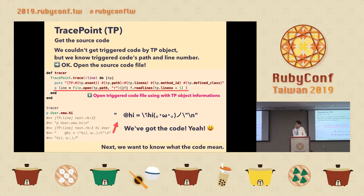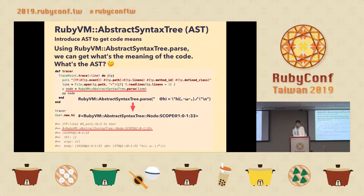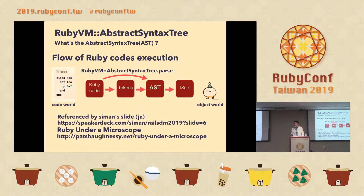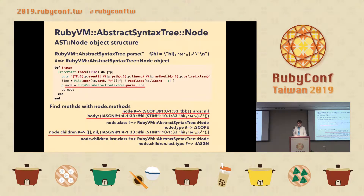Next, we want to know what the code means. Using RubyVM::AbstractSyntaxTree.parse method, we can get the meaning of the code. What's the AST? In RubyVM, Ruby executes code in steps: Ruby code is changed to tokens, then to AST, then to ISEQ. We can get an AST node object using RubyVM::AbstractSyntaxTree.parse. Using the methods method, we can get the AST node object structure.